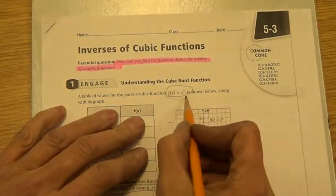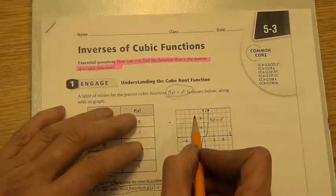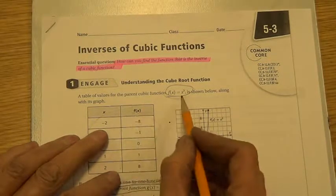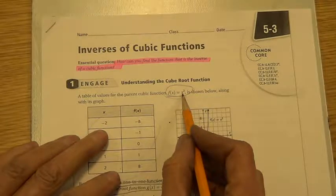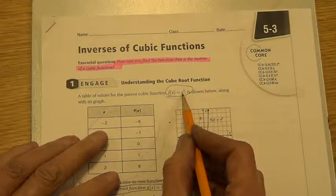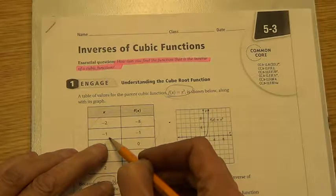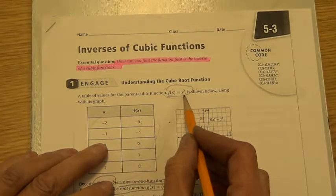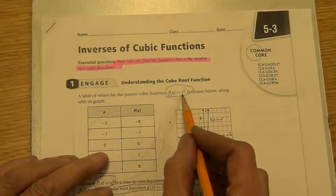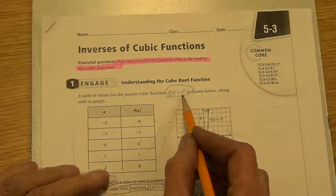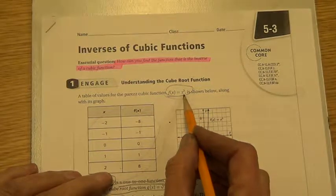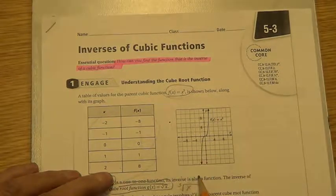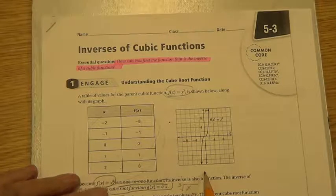Now, a cubic function, again, is like this. We've done that in the last semester, so as you plug in, we choose really nice numbers like negative 2. Negative 2 times negative 2 is positive 4, times negative 2 is negative 8. We work through negative 1, 0, 1, and 2 to get our x and y values. When we graph them, it looks like the S-shape. That is the parent cubic function.